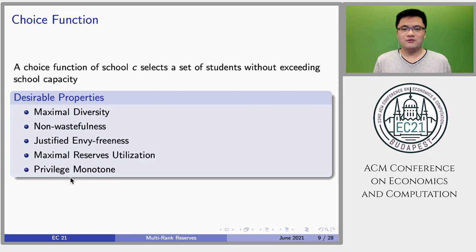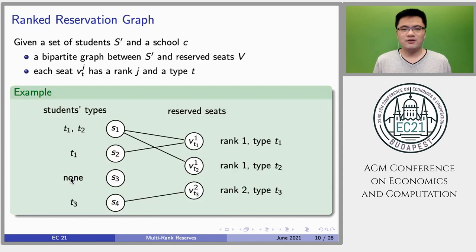A choice function of school c takes the set of students as input and returns a subset of students as output without exceeding its school capacity. We consider five desirable properties that the choice function should satisfy, including maximal diversity, non-wastefulness, justified envy-freeness, maximal resource utilization, and privilege monotone.